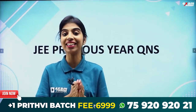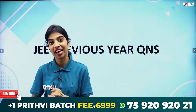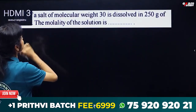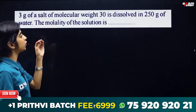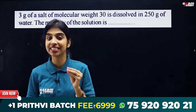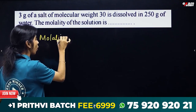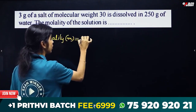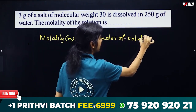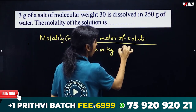We will talk about some basic concepts of chemistry. The first question is: 3 grams of a salt of molecular weight 30 is dissolved into 50 grams of water. The molality of the solution is? The molality equation is mass of solute divided by mass in kilograms of solvent.